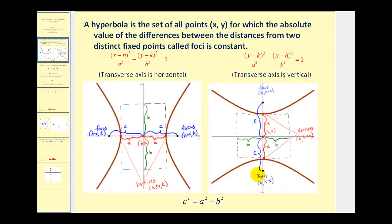The center of the hyperbola in both cases will be (h, k). A squared will be the denominator of the positive part of the equation, and b squared will be the denominator of the part that we're subtracting, or the negative part.